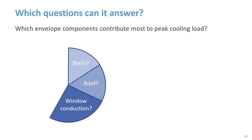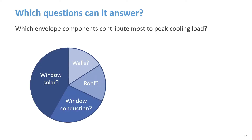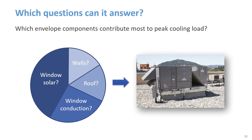Is it the walls, the roof, window conduction, or window solar? This information might show that an extra investment in envelope performance, like better windows, can reduce the load enough to downsize the HVAC system, and maybe offset the cost of those better windows.